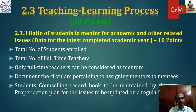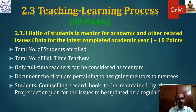Point 2.3.3 covers the ratio of students to mentors for academic and related issues. Data for the latest completed academic year alone is sufficient. This is quantitative — you need to provide the total number of students enrolled and number of full-time teachers, as only full-time teachers can be considered as mentors. Circulars pertaining to assigning mentors must be properly documented and signed by the Head of Institution and the IQAC team. A Student Counseling Record Book is also required.